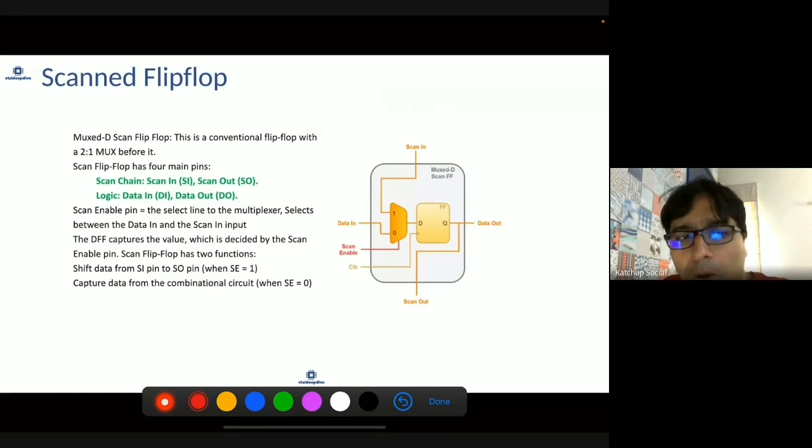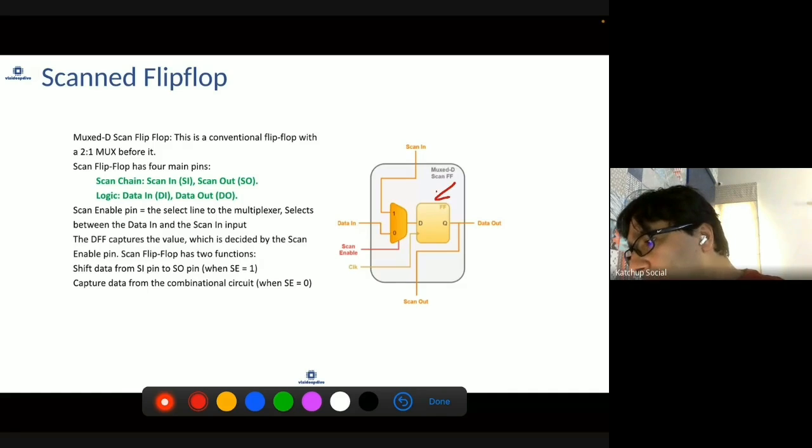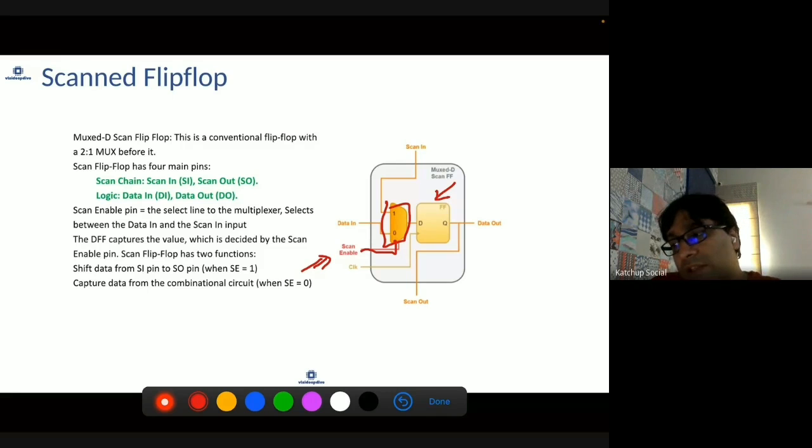You modify every flop and change it into a scan flop, what is known as scan flop. How you do that is, this is your default flop. You add a mux in front of it, and add a scan enable pin, which will control whether this flop becomes controllable or observable. When scan enable is 1, it will take the data input not from the functionality of the design, but from the scan chain input. When scan enable is 0, it will take the normal logic input.